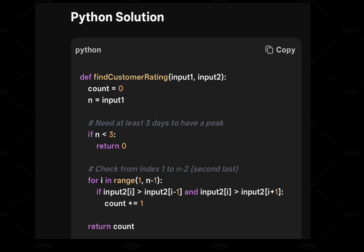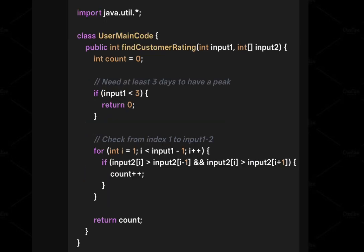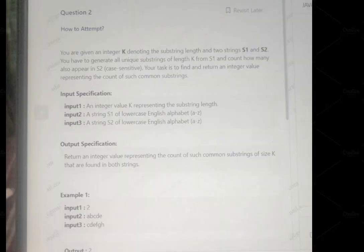Looking at the Python solution: input one is how many elements are in the array, and input two is the array itself. We declare a variable count; n is stored from input one. If n is less than 3, we return 0 because with fewer than three elements you cannot compare both neighbors. In the for loop, we check whether each element is greater than the previous and next element, and based on the peak count we return the result. A Java solution is also provided.